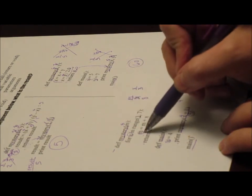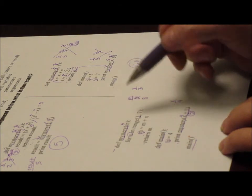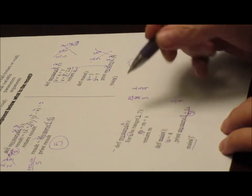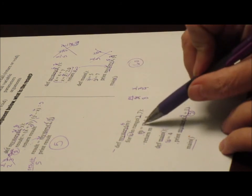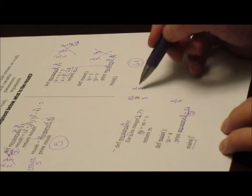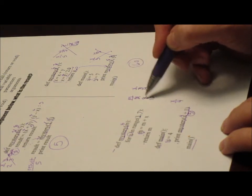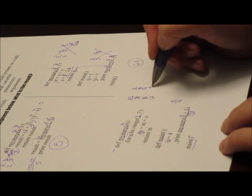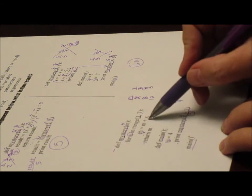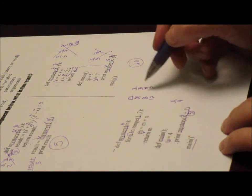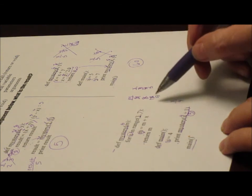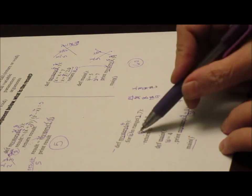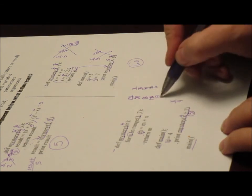Going back into the loop, X is incremented to four. M equals M plus X: eight plus four gives twelve. I finish that iteration and increment X again to five. Inside the loop: twelve plus five gives M equal to seventeen. Another iteration: X becomes six, and seventeen plus six gives M equal to twenty-three.